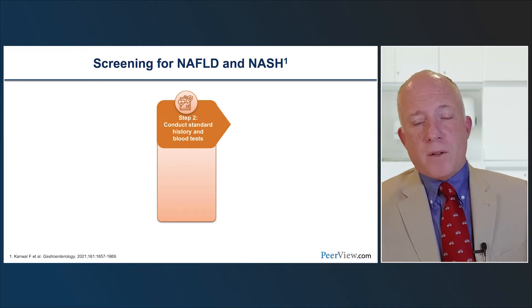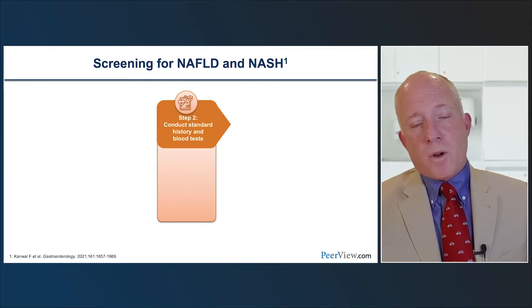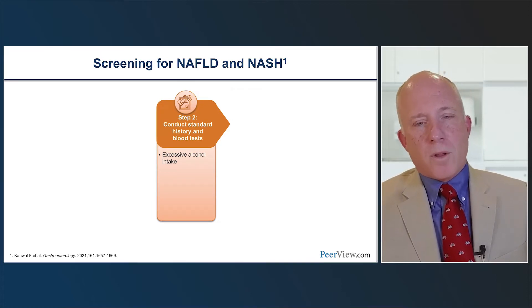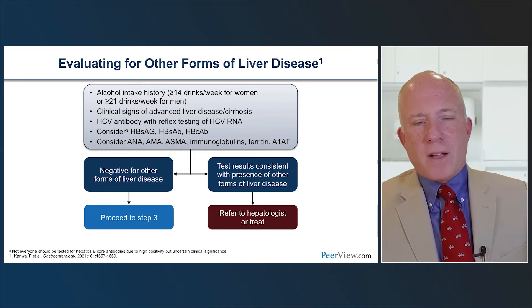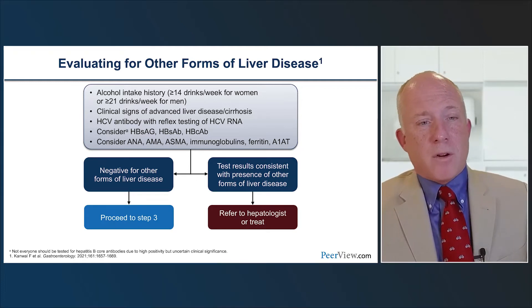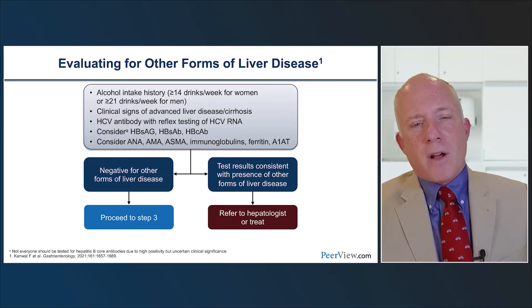When you find incidental transaminitis or excessive fat on imaging, screen for other causes. The most common is excessive alcohol intake — more than two drinks per day in women or three in men. Check for clinical signs of advanced liver disease such as cirrhosis or jugular venous distension. Screen for viral and autoimmune hepatitis — especially hepatitis C in baby boomers — and because we're dealing with insulin resistance, also look for hemochromatosis.